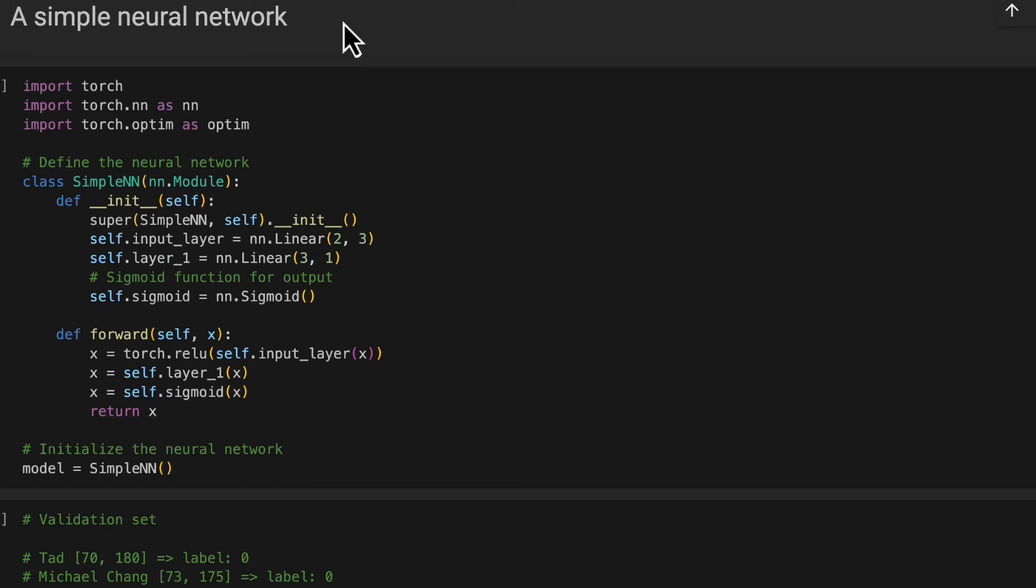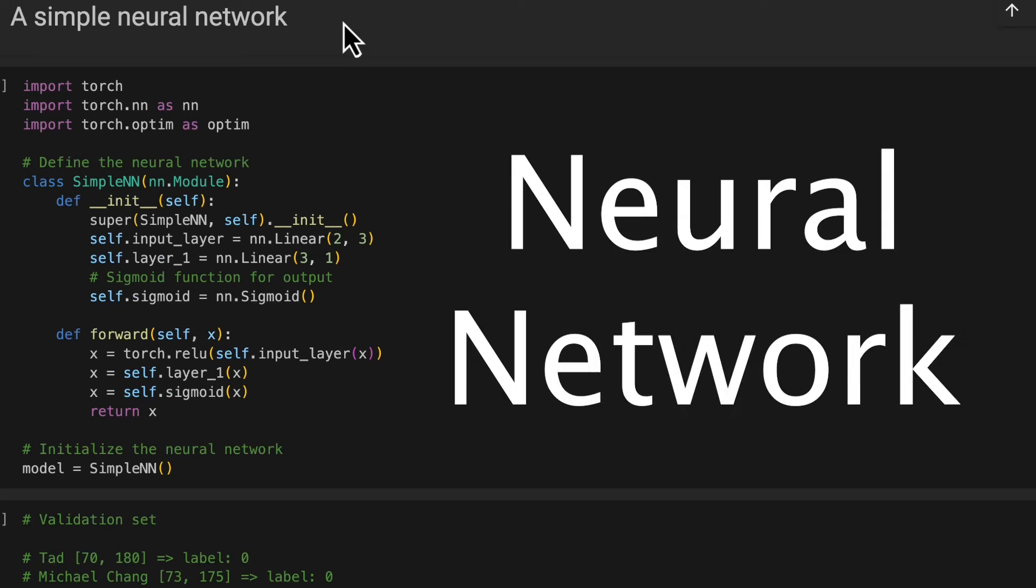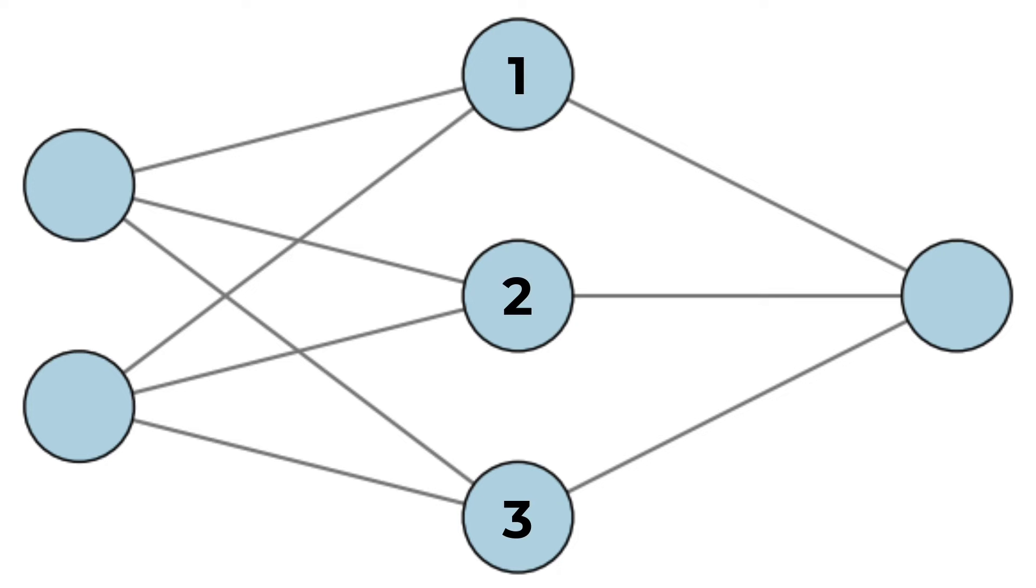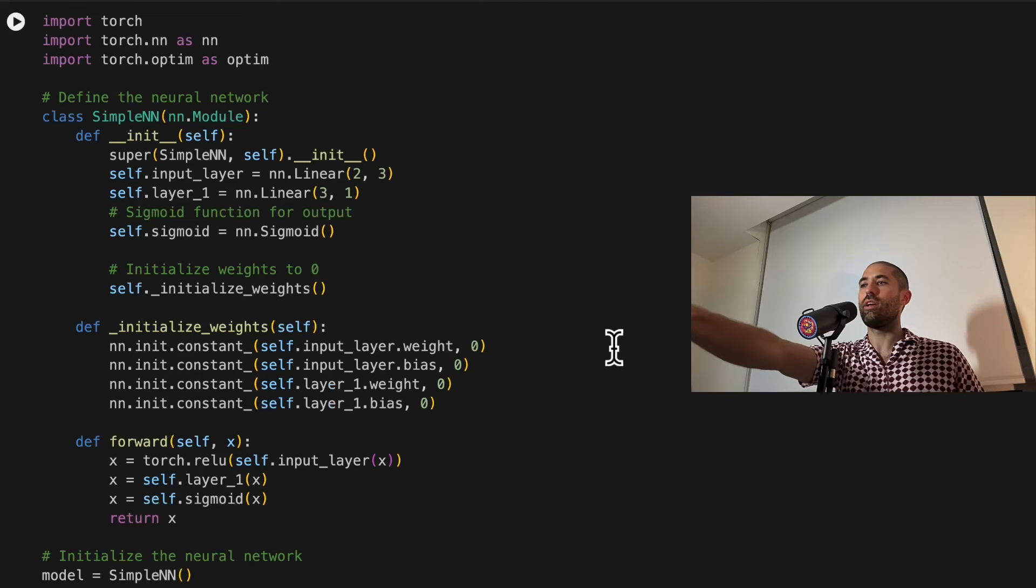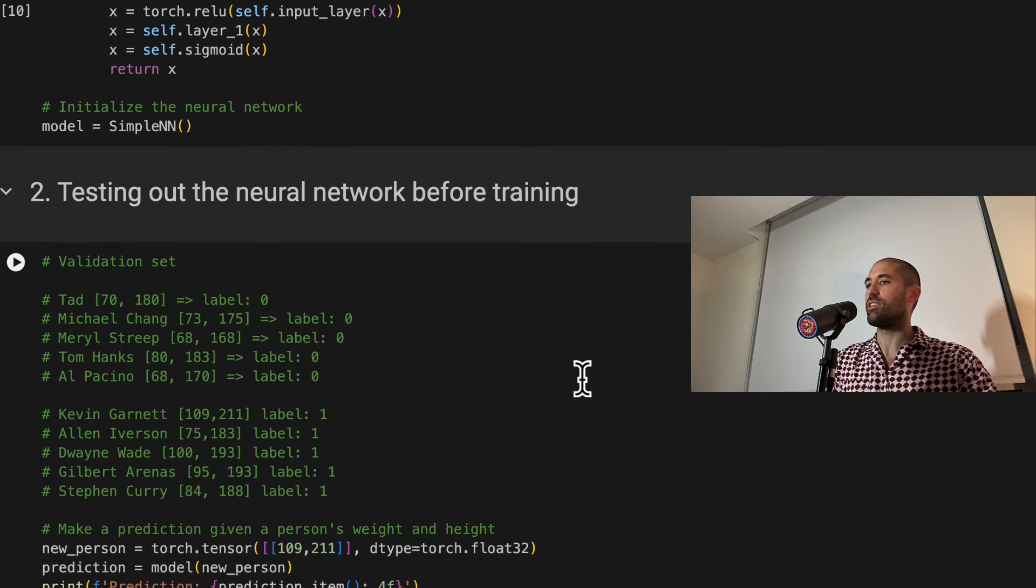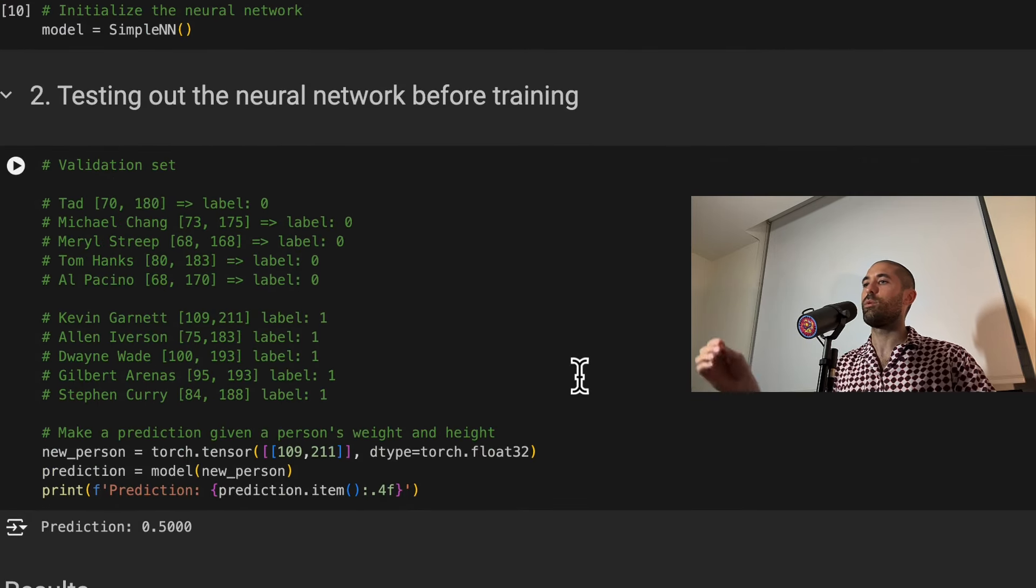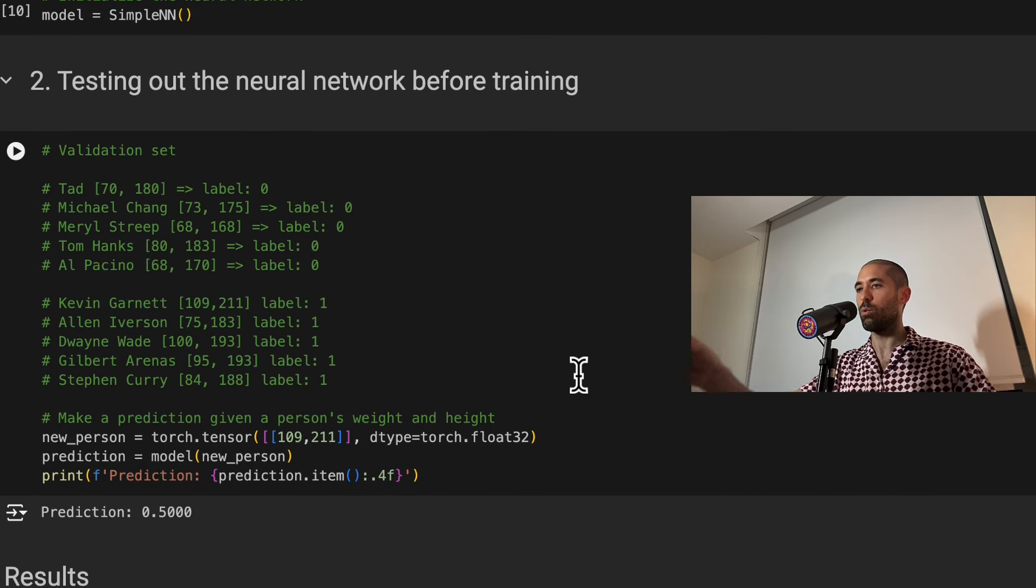When you start connecting artificial neurons in different combinations, you get what is called a neural network. Here's a diagram of our initial neural network, which was just a single neuron. It received one input, contained one neuron, and that neuron produced one output. And here is a diagram of our slightly more sophisticated neural network with three neurons. This neural network takes in two inputs, an individual's weight and height. That information is then passed into three separate neurons. And the output of these three neurons is then combined into a single final output that tells us whether or not this individual is an NBA player. Here is our NBA player detector neural network specified using the PyTorch API. And you can see here that we're initializing all of the parameters of this neural network to have values of zero. Now that we've initialized this neural network, let's test it out before we train it. Just as we did before, I'm going to speed this part up so we don't waste time. And then we'll review the results.